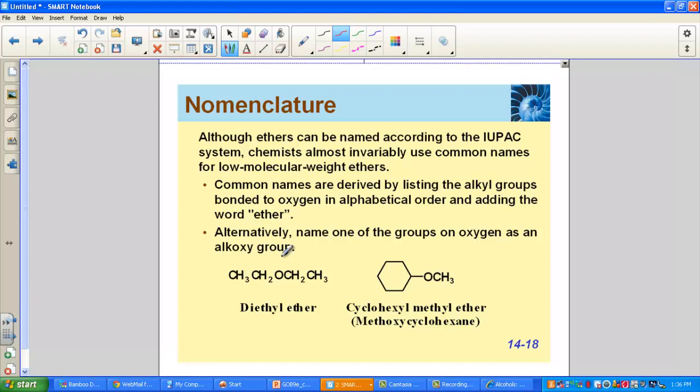Although the IUPAC system can be used to name ethers, chemists almost always use common names for these low molecular weight ethers. Common names are derived by listing the alkyl groups bonded to the oxygen in alphabetical order, then the word ether. For instance, we have an ethyl two-carbon chain, an ethyl two-carbon chain attached to the oxygen in this ether: diethyl ether.